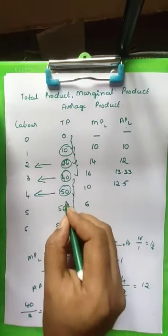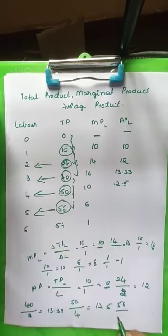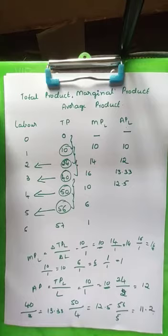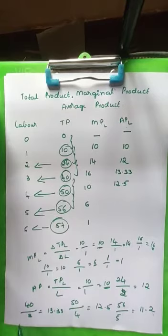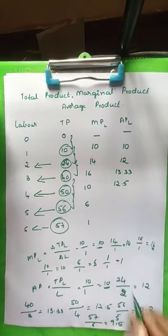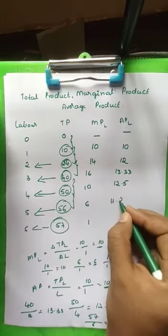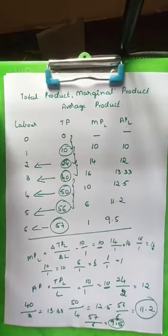The output is 56 and labour used is 5, so 56 divided by 5 equals 11.2. The last one: total product is 57 and labour used is 6, so 57 divided by 6 equals 9.5. So the average product values are 11.2 and 9.5 respectively, and like this you have completed your table.